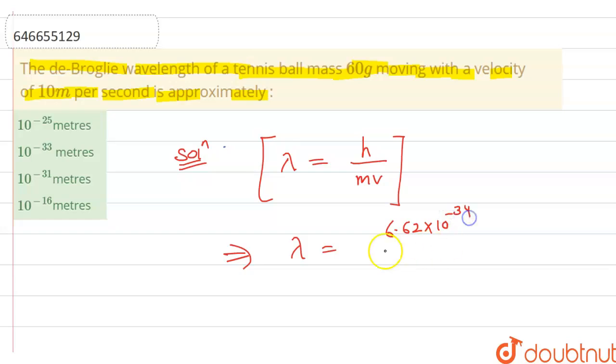...have to convert it into kilograms. So 60 × 10^-3 kilograms times the velocity, which is given as 10 meters per second.